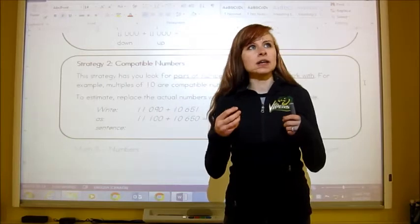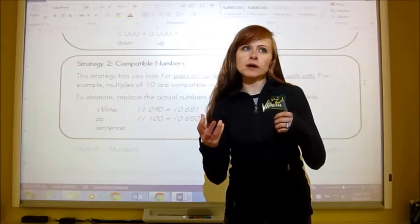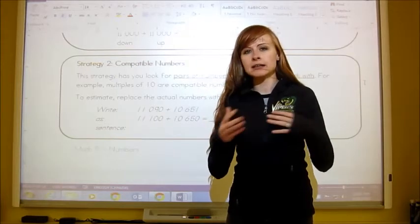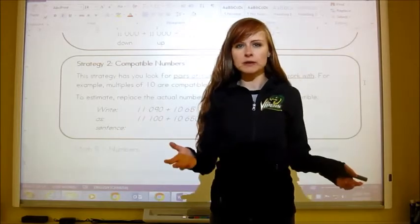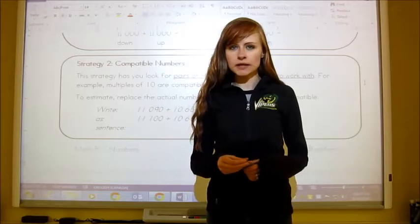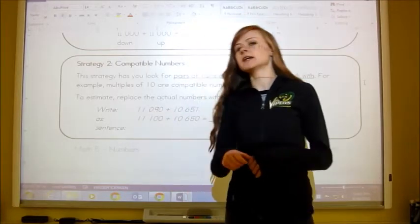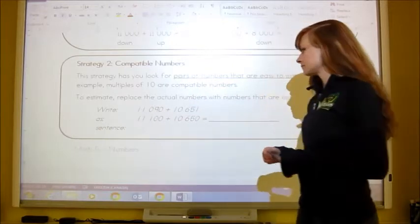If I had, say, 24 plus 17, I could round 24 to 23, and then get those compatible numbers that way to make it equal 10. That's basically what you're doing is trying to make the end numbers equal 10 or a multiple of 10, like 100 or 1000.